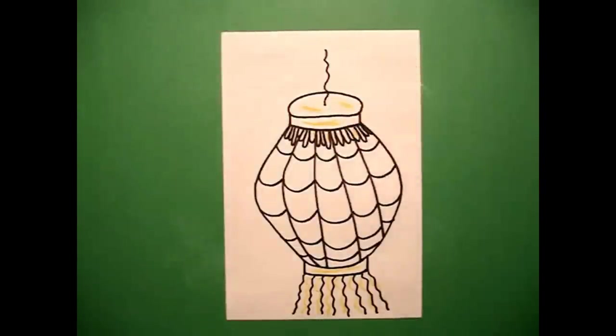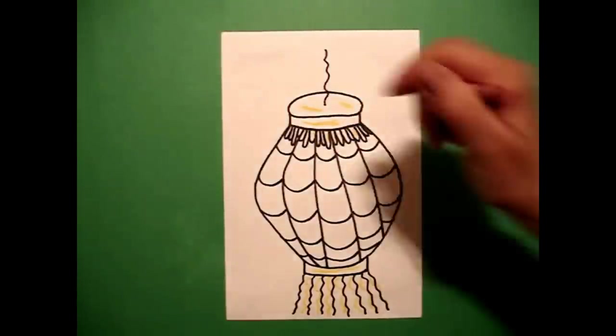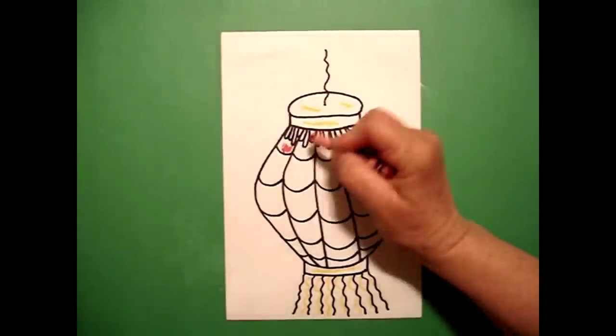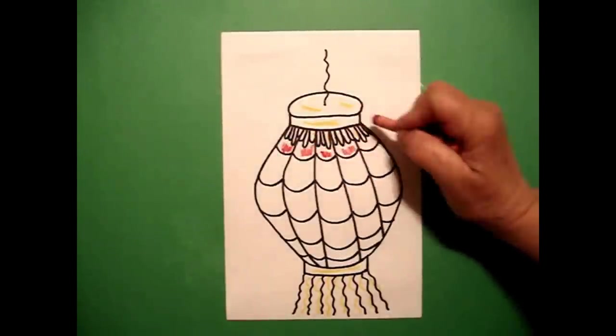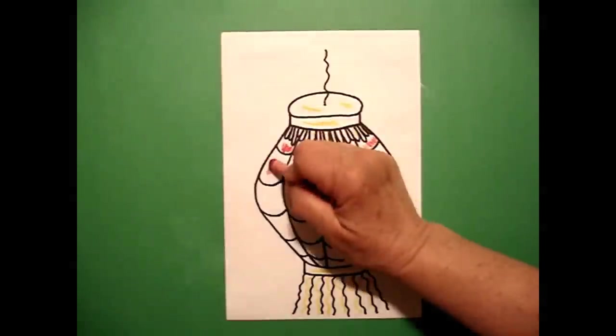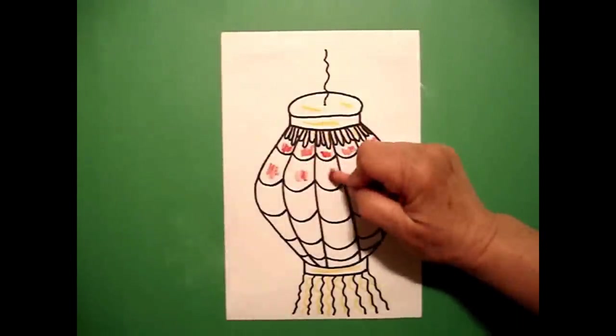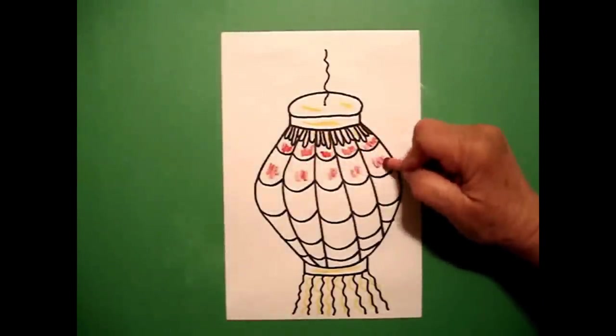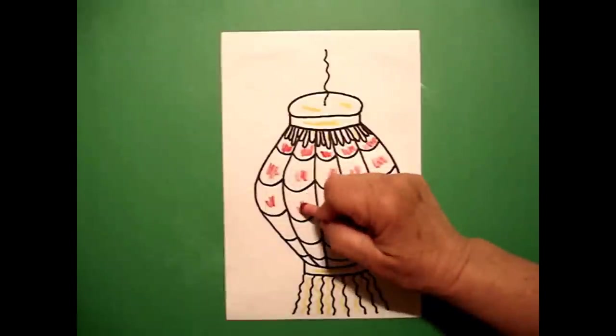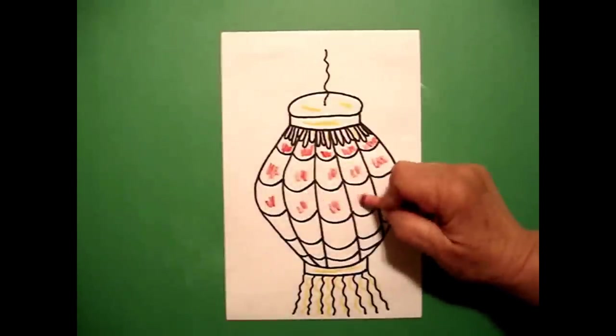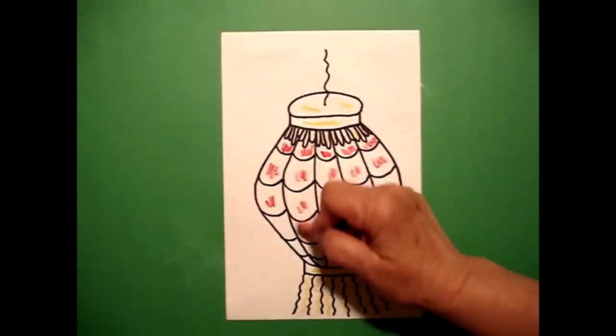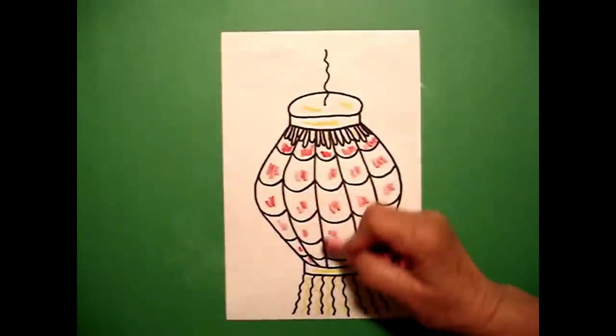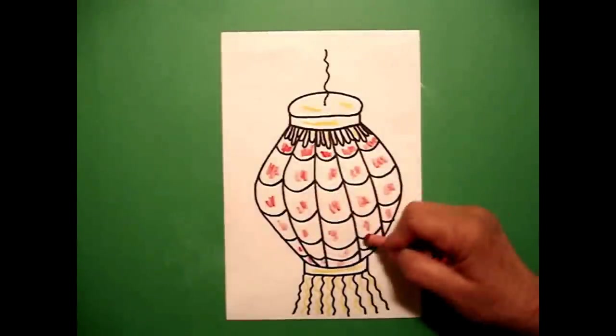Once I've done that I take my red crayon and I color in each of the little sections of the lantern all the way down, all the way down, all the way down. Now this might take a little bit of time but it's worth it once you see the finished product, all the way down.